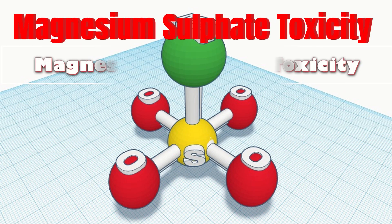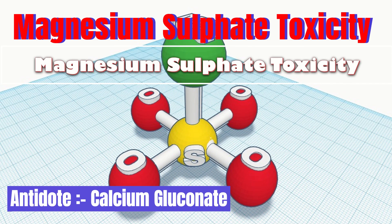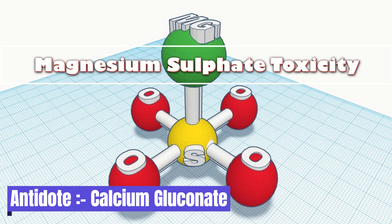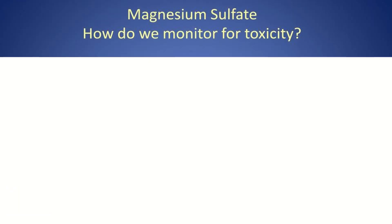Magnesium sulfate toxicity and the role of calcium gluconate is the topic of our discussion today. When magnesium sulfate is given to the patient, for example for eclampsia, how do we monitor for toxicity?